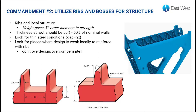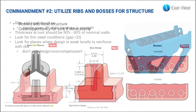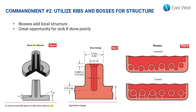The second commandment for injection molding is to utilize ribs and bosses for structure. Ribs and bosses are surfaces that extend off of the nominal wall in order to structurally reinforce the part. You want your rib wall thickness to be roughly 50 to 60 percent of your nominal wall. Ribs can give you strength in a third order — the taller the rib, the more strength relative to its height. It's a great way to add structural rigidity without thickening the nominal wall, which would cause additional cooling time and cost.